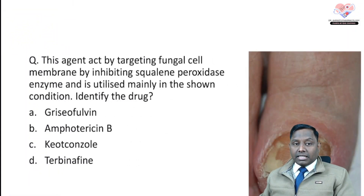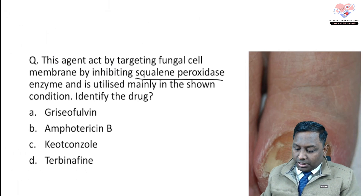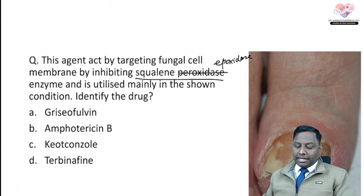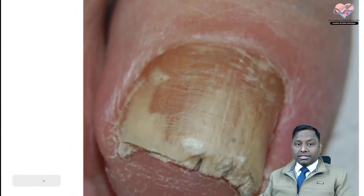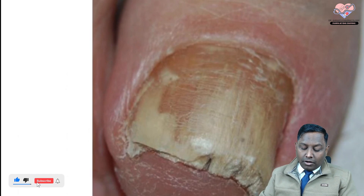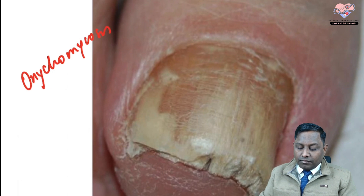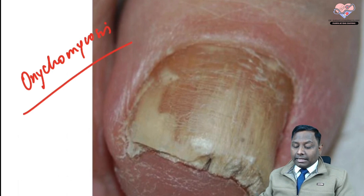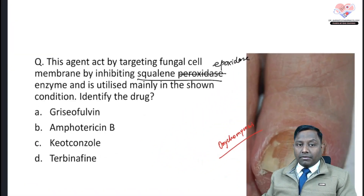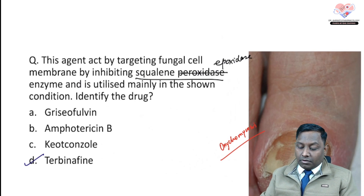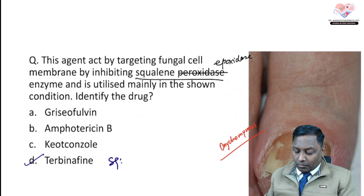The next question shows a fungal infection of the nail — onychomycosis. The agent described acts by targeting the fungal cell membrane by inhibiting squalene epoxidase. This enzyme is the rate-limiting step in fungal cell membrane formation. Given the diagnosis of onychomycosis and the mechanism of squalene epoxidase inhibition, you can directly identify the drug as terbinafine.